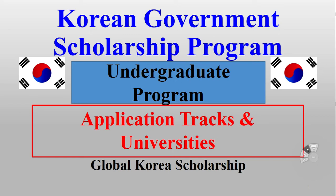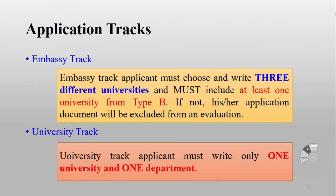In the coming videos, I will give you the details about the departments in each university, but here I will provide only the list of universities and what measures you can apply to each track. Basically, there are two tracks: one is the Embassy Track and the other is the University Track.